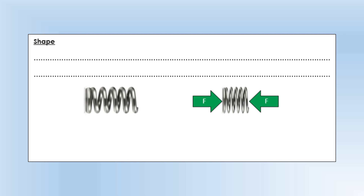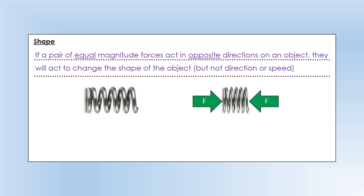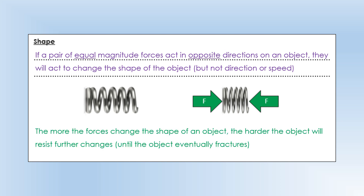The third thing a force can do is act to change the shape of an object. You can see here the pair of forces — to change the shape you need two forces acting in opposite directions. Here we've compressed the object, so if you have two forces equal in magnitude and opposite direction, they will change the shape but not the direction or speed. A good general rule of thumb is that the more you try to change the shape of an object, the harder the object resists until it actually breaks. So if you're stretching a spring, the longer you stretch it, the more it will resist, until you actually break that spring.